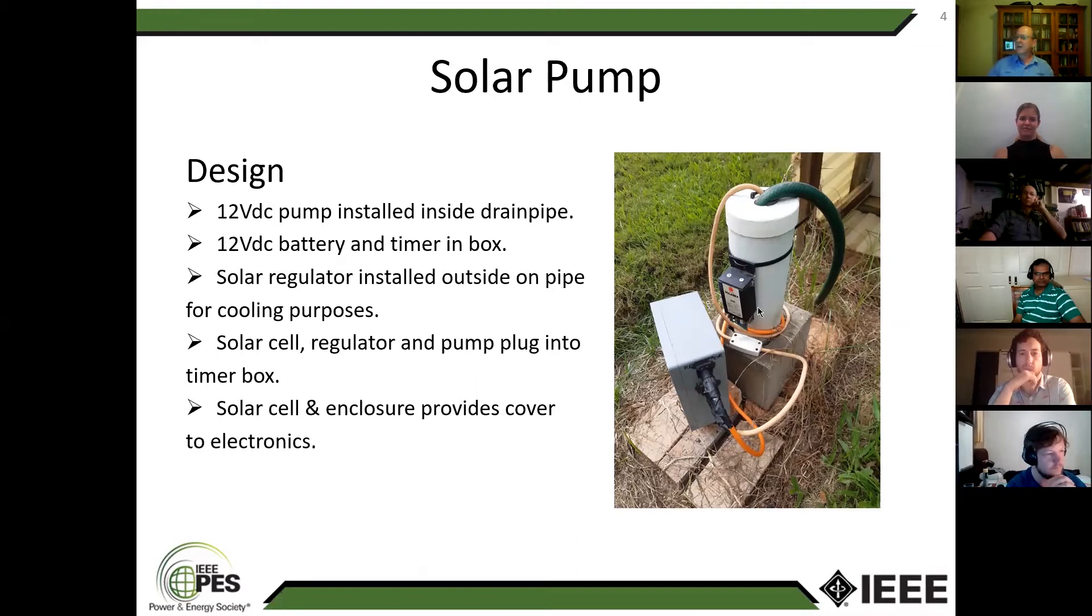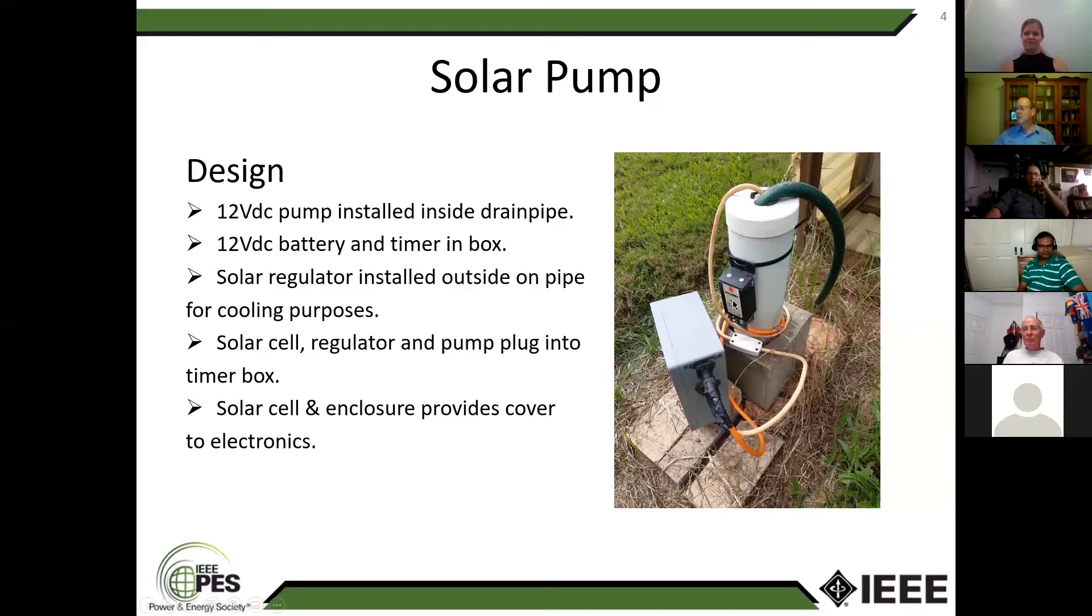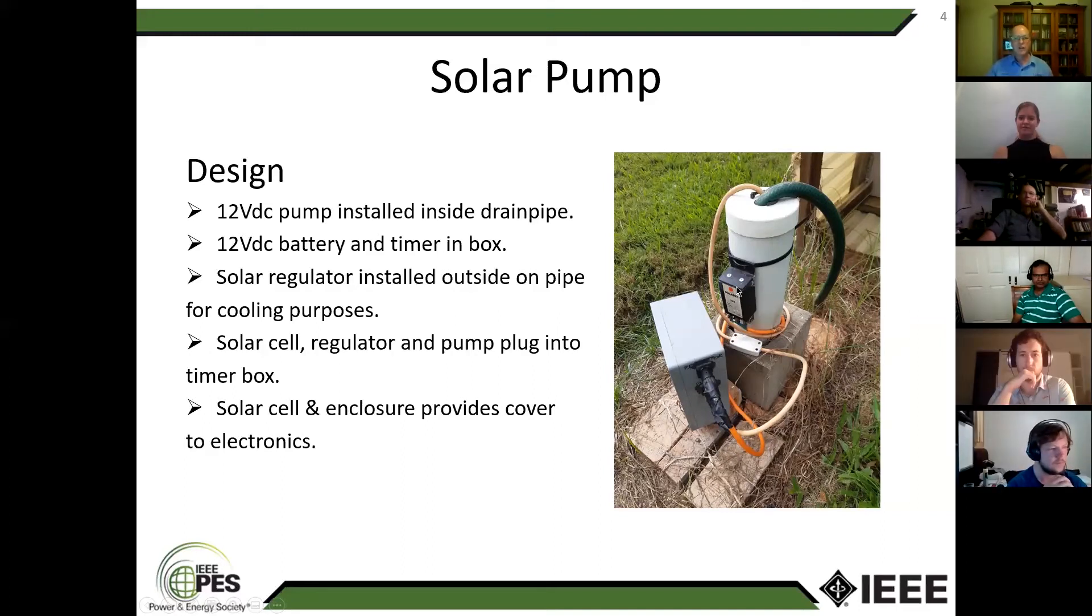Basically I've got a 12 volt bilge pump which slides down into the pipe here and it's connected to the hose that comes out at the top. There's a box here with the battery and a timer in there. I use that to power the pump and the timer does the timing operation. You also see there's a solar regulator installed on the pump here. I installed it outside because it gets a bit hot, so you don't want to have that inside the electronics enclosure.